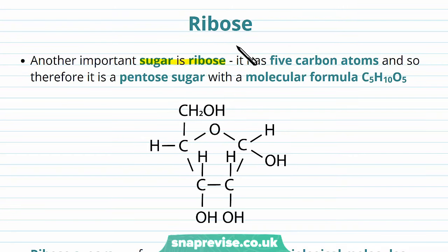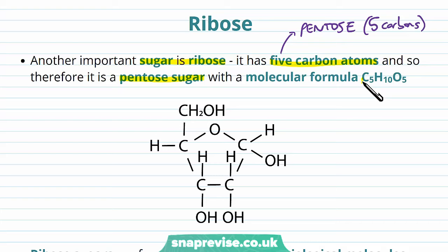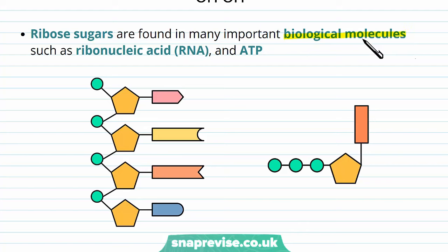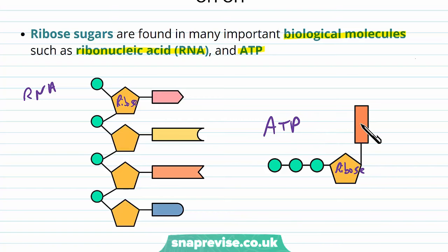Another important example of a sugar is ribose. Ribose is a pentose because it has five carbon atoms, and it's still a monosaccharide. Pentose refers to five carbons, and we can work out its molecular formula: C₅H₁₀O₅. Ribose has a pentagonal shape and happens to have five carbons, though one corner of the shape is actually made by oxygen, as was the case in glucose. Ribose is important in biology because it's found in RNA (ribonucleic acid), used in transcription, and also in ATP. RNA is a polynucleotide containing repeating nucleotides, and ATP also has ribose as a key part of its structure.